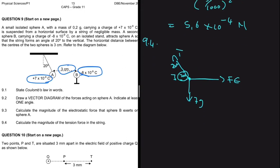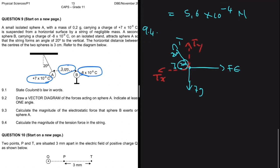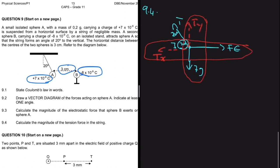Since sphere A is not moving up or down, the Y component of the tension force balances with Fg. Since sphere A is also not moving left or right, the X component of the tension force balances with the electrostatic force. Either equilibrium condition lets us find the tension. Let's do both methods.